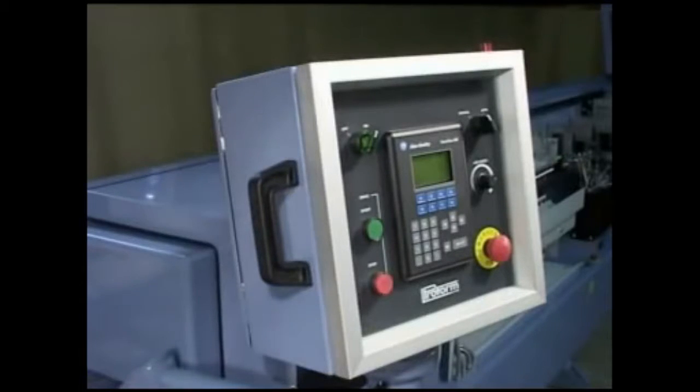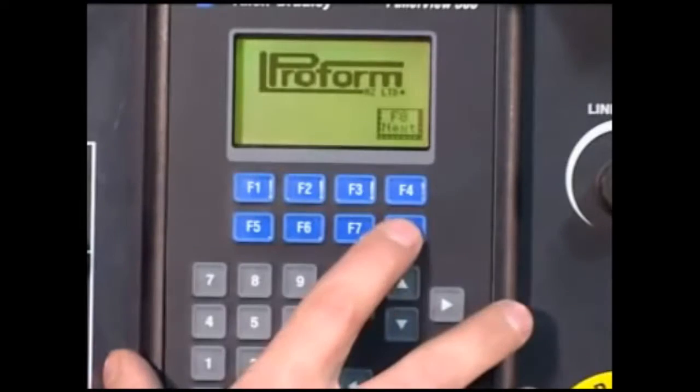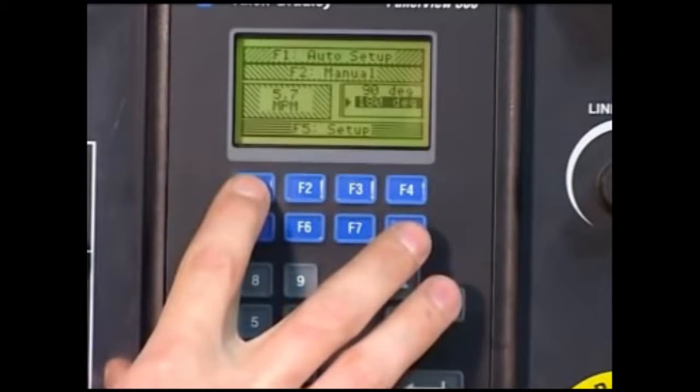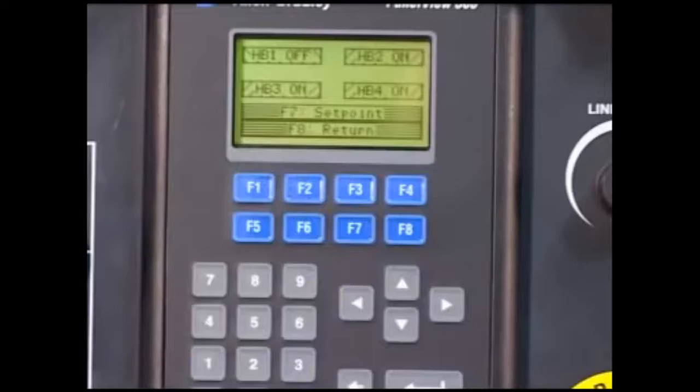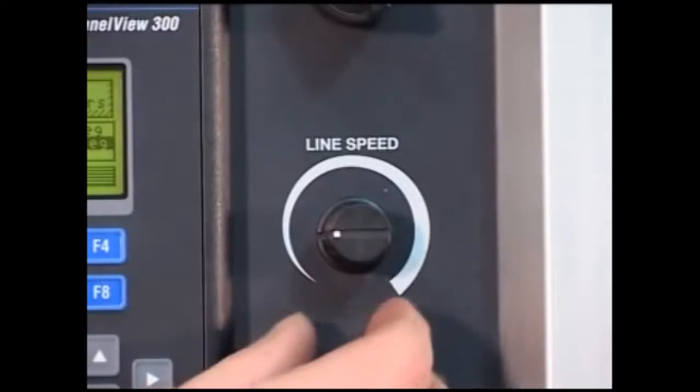All operations of the TN48 are input on the operator's console. From machine power-up, the operator selects the auto setup mode, then the desired roll type, turns the heaters on, and enters the optimum line speed.